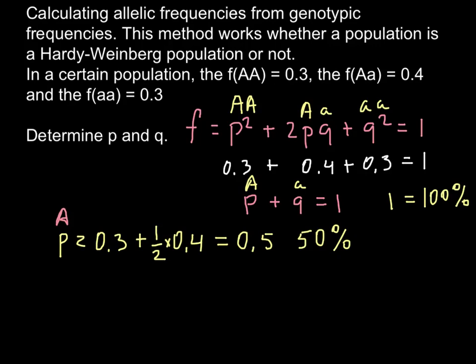In order to find the frequency of the q allele, it's very easy. From this formula, we may say that if we know p, then 1 minus p would be q. If p is 0.5, then 1 minus 0.5 equals 0.5. So the frequency of allele q would also be 0.5. These are our answers.